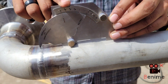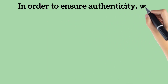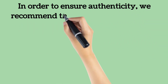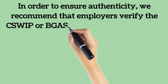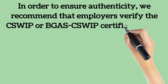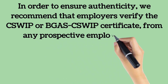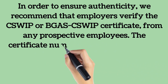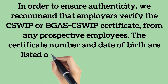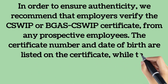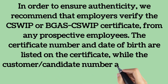CSWIP certificates, once issued to the respective inspector, can always be verified through the online verification portal of the Welding Institute. In order to ensure authenticity, it is recommended that employers verify the CSWIP or BGAS-CSWIP certificate from any prospective employees. The certificate number and date of birth are listed on the certificate, while the candidate number and picture are provided on the ID card once received.